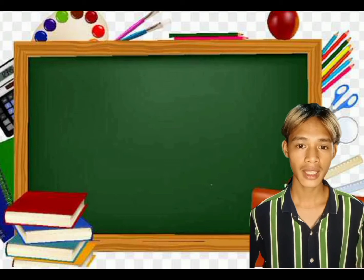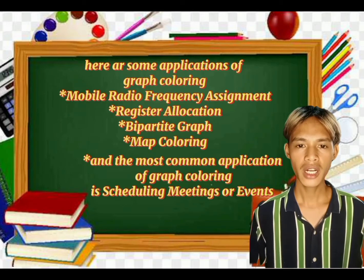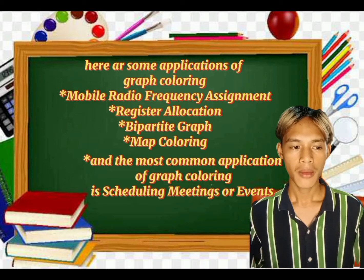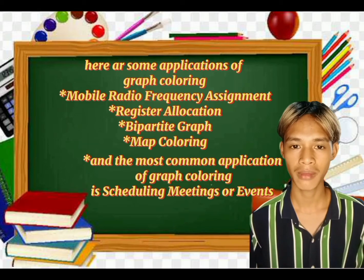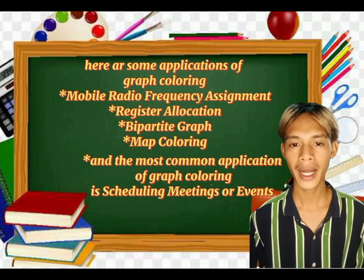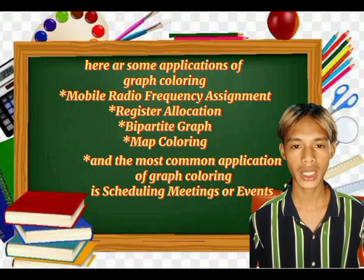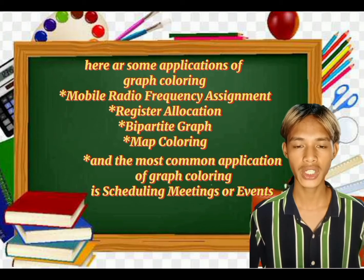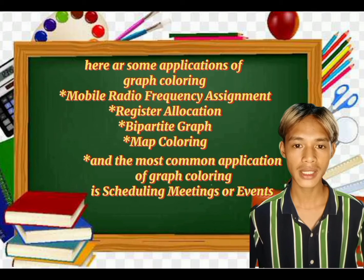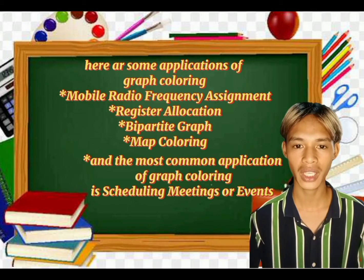What are examples of the application of graph coloring? There are a few applications such as mobile radio frequency assignment, register allocation, bipartite graphs, map coloring, and the most common application of graph coloring: scheduling a meeting or event. The best example will be shown in the next slide of this video.